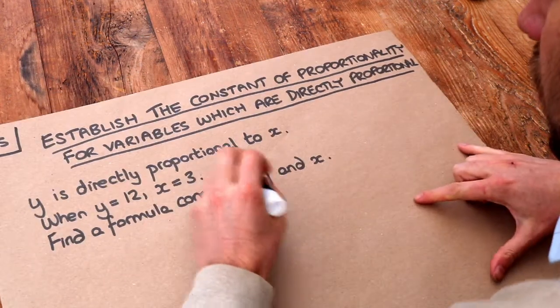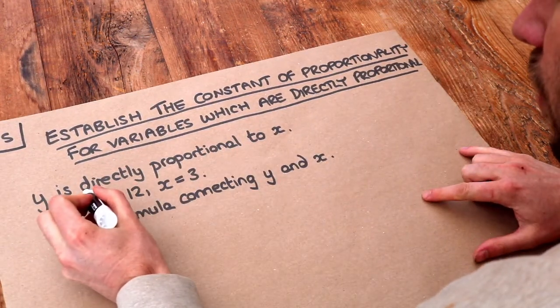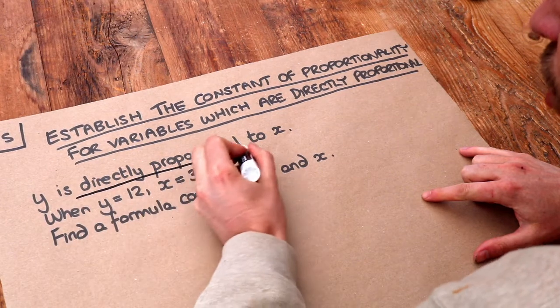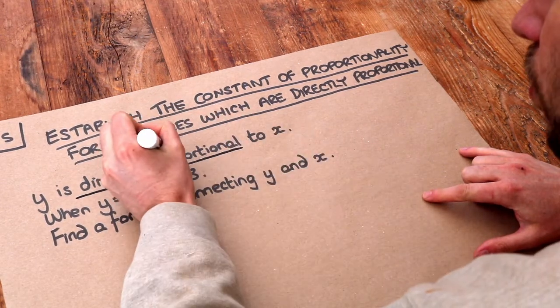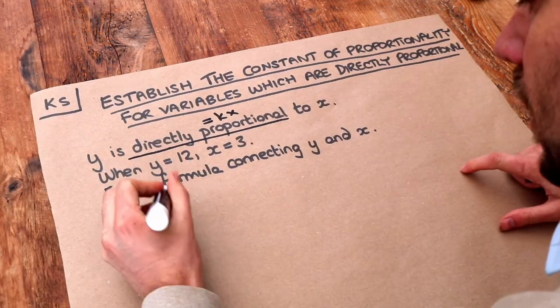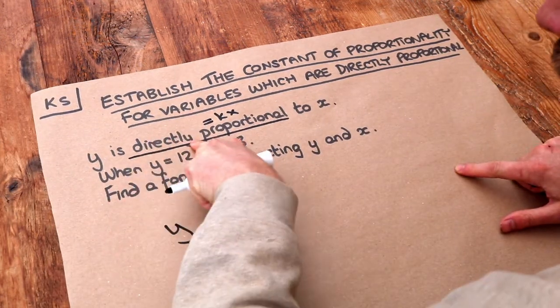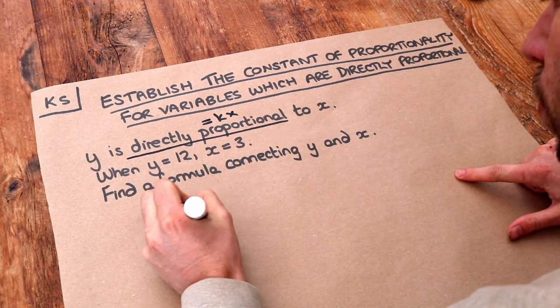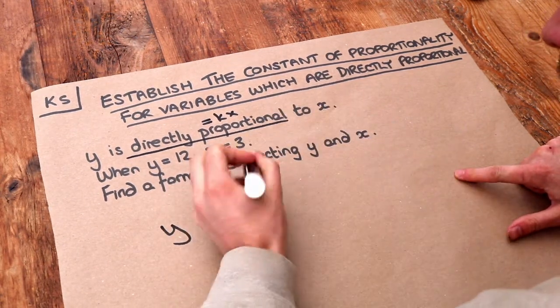Now all you need to do is replace the words 'is directly proportional to' with 'equals k times'. So if we've got y is directly proportional to x, that equals k times x, and that gives us an equation.